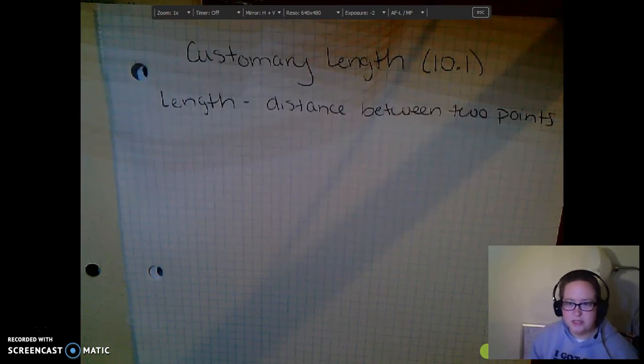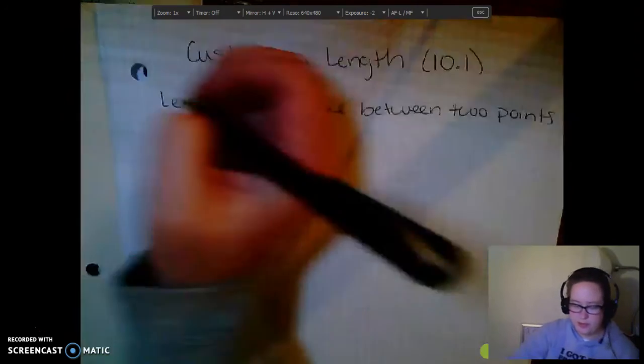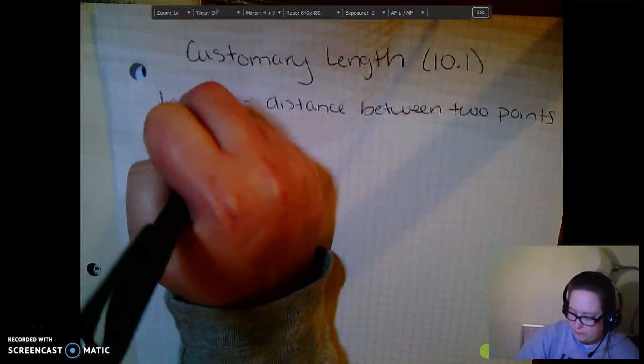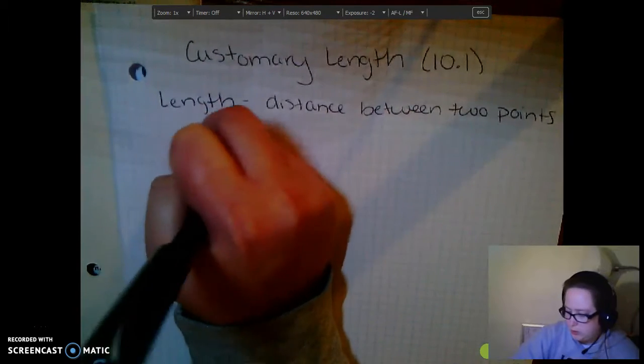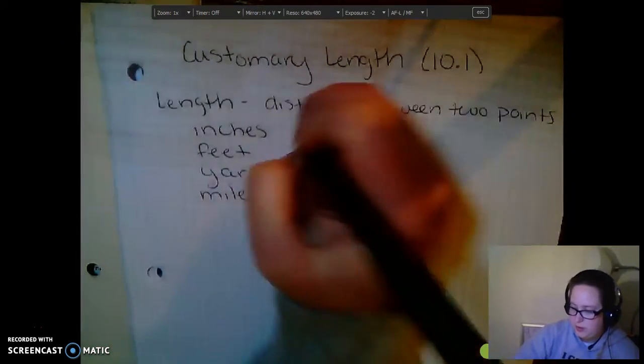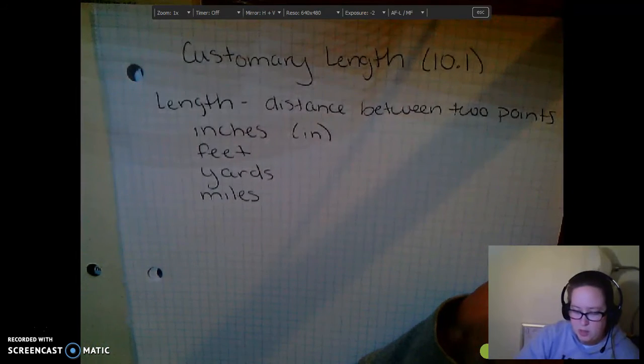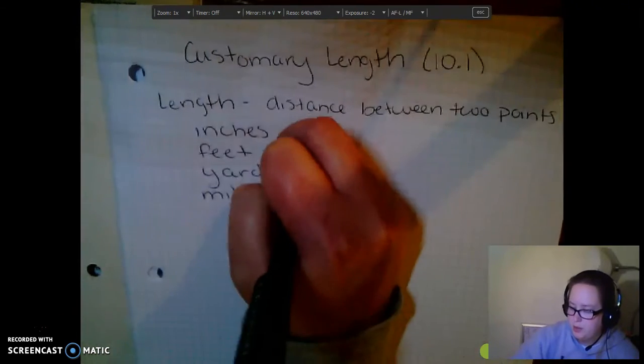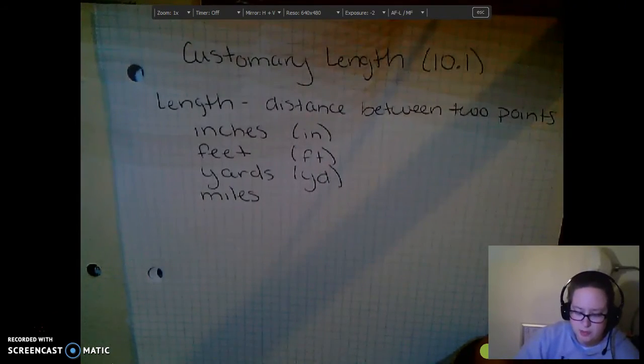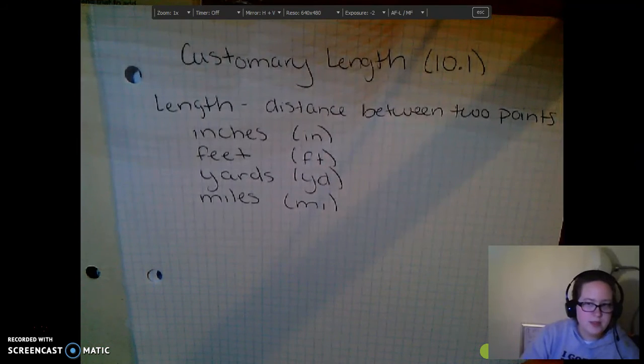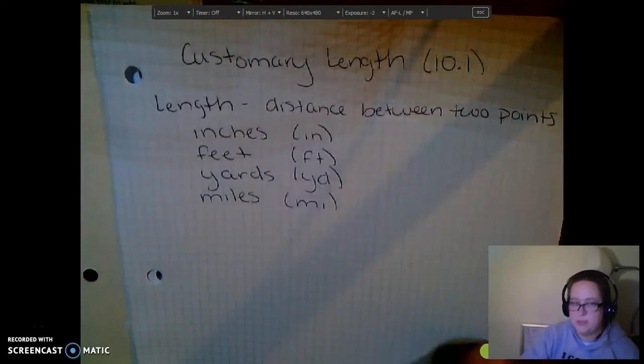unit of measure that is commonly found in the United States. So, some common measurements or units that we use for length are inches, feet, yards, and miles. We abbreviate inches as IN, feet or foot as FT, yards as YD, and miles as MI. So, these are the units that we are going to be using in this lesson.